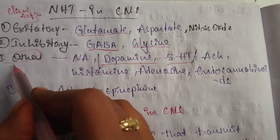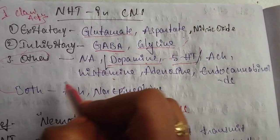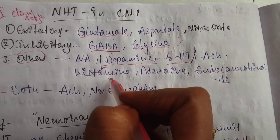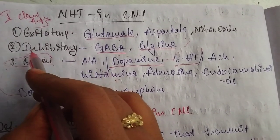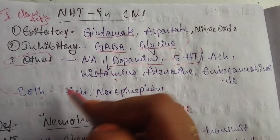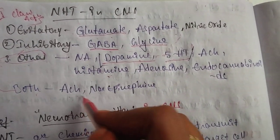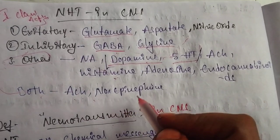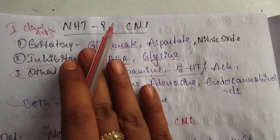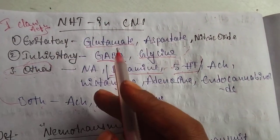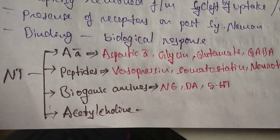The 'others' category includes neurotransmitters that have both excitatory and inhibitory actions, such as acetylcholine and norepinephrine. This is the general classification based on their actions.